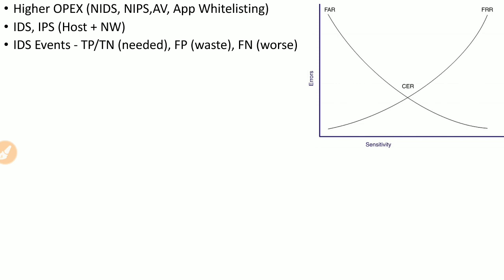This balance is maintained by the CER (Cross Error Rate), also known as the Equal Error Rate (EER). At this point, the false acceptance rate and false rejection rate are equal, and this represents the true correct strength of the system or control.